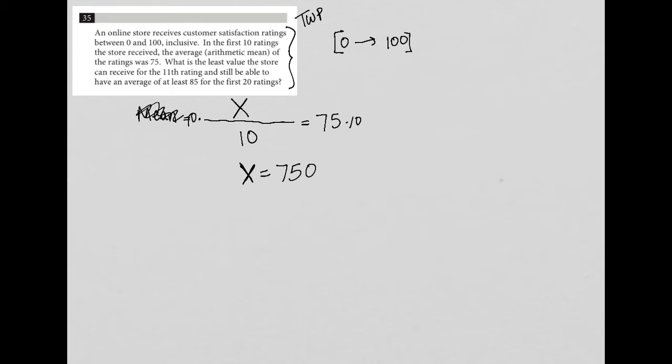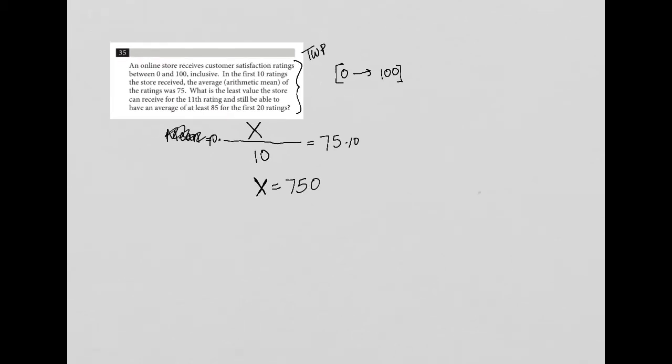The next sentence says, what is the least value the store can receive for the 11th rating and still be able to have an average of at least 85 for the first 20 ratings? That's a very interesting question. I'll read it again. What is the least value the store can receive for the 11th rating? So I'm going to say X plus the 11th rating plus another nine ratings. And then when I divide all of that by 20, I want to be greater than or equal to 85. There's my interpretation or translation of that last sentence.